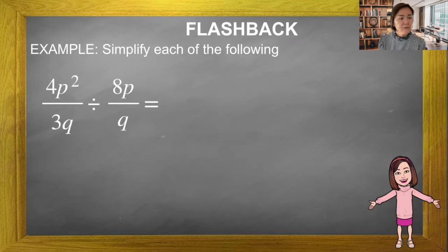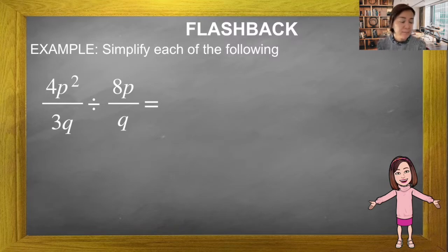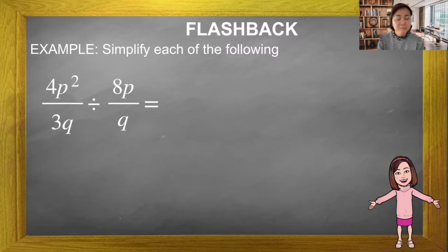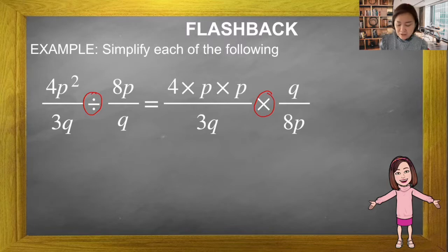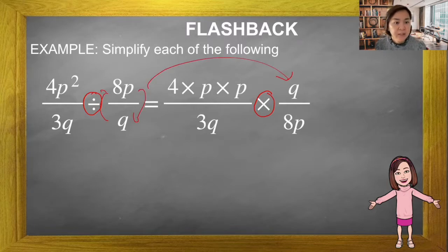Now we go to division. When you do divisions, make sure you change it into multiplication. To do that, don't forget: your numerator becomes the denominator and denominator becomes the numerator — that is, you take the reciprocal. So the divide sign turns into multiply, and the second fraction is flipped.